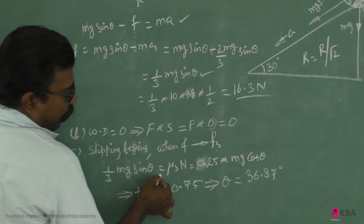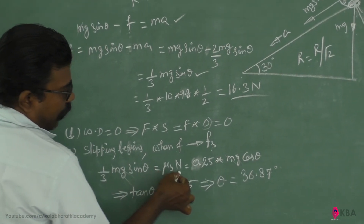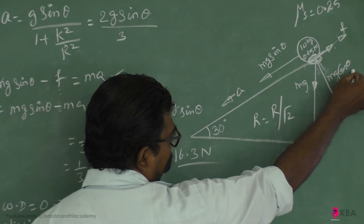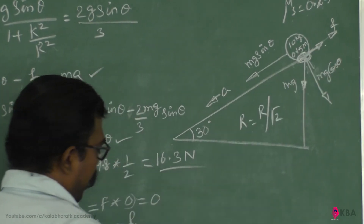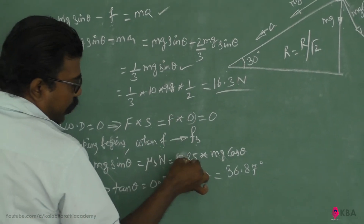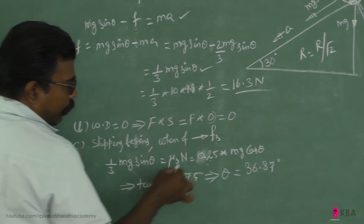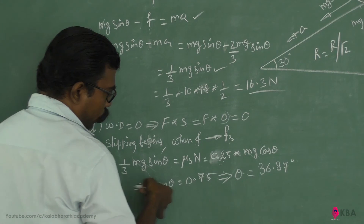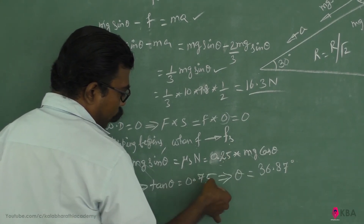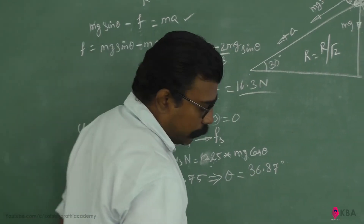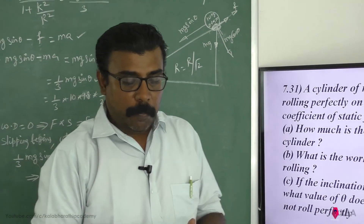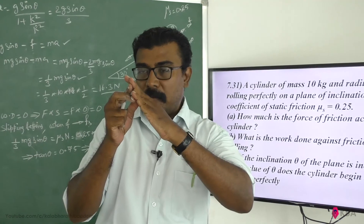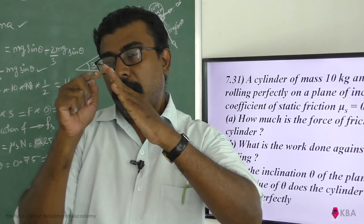Setting the rolling friction equal to the maximum static friction: (1/3) mg sinθ equals μs times N equals 0.25 mg cosθ. Canceling m and g, we get sinθ / cosθ equals 3 times 0.25, so tanθ equals 0.75, giving θ equals 36.87 degrees. This is the critical inclination at which skidding begins.